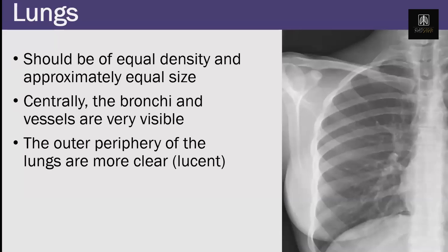When we talk about the lungs on chest X-ray, you want to make sure that they're about the same size and density. An important feature is that as you go from central to peripheral, the vessels and bronchi should get progressively smaller, and in the outer one-third of the chest X-ray you shouldn't really see any lines because the vessels and bronchi are so small they should not be visible.